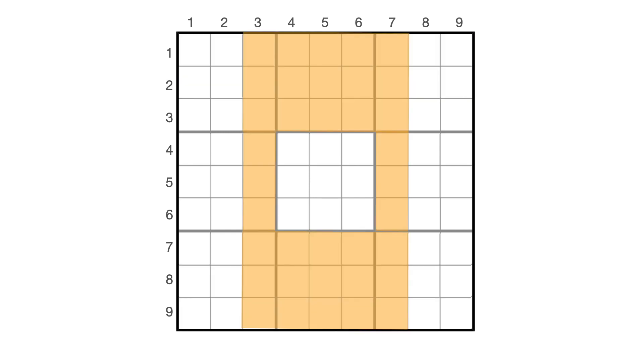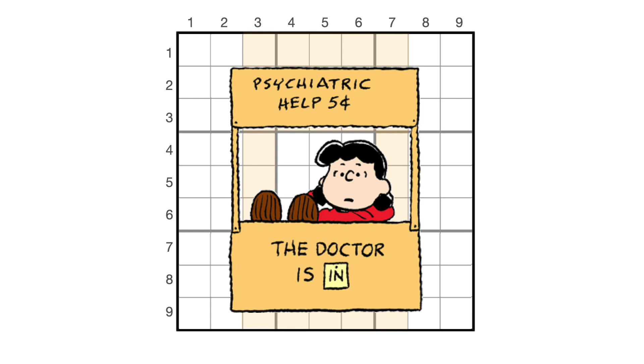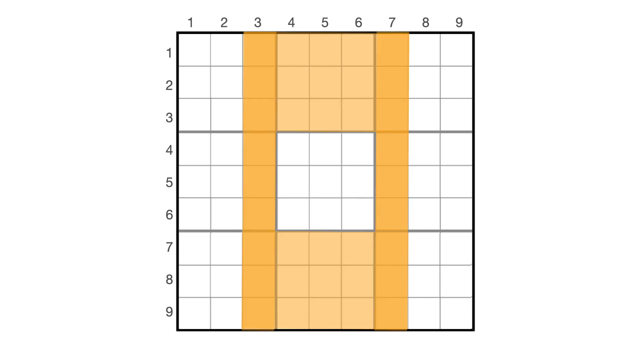Okay, now what's shaded in yellow here? Well, you might not immediately recognize this, but it is also four sets of the digits one through nine. It doesn't look like any of the examples we've seen so far. What it looks like to me actually is Lucy's psychiatric health stand from the Peanuts comic strip. But if we take a closer look, what we're actually looking at is two full columns, four and seven, and then two full boxes, box two and box eight. So yeah, these yellow cells are a set of the digits one through nine, four times. So it is an equivalent set to these blue cells.